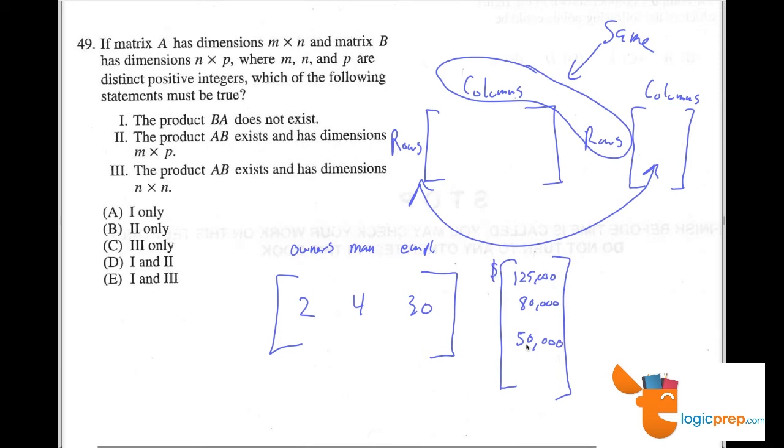This would make sense considering we have a one by three, right? We have one row and three columns. And here we have three columns and one row. Here we know we can multiply because the threes add up. If we were to multiply these, it would be 2 times $125,000 plus 4 times $80,000 plus 30 times $50,000. That would show us what the product of these matrices are. It would be one value, and that one value would be the total income of all the people that work for the company.